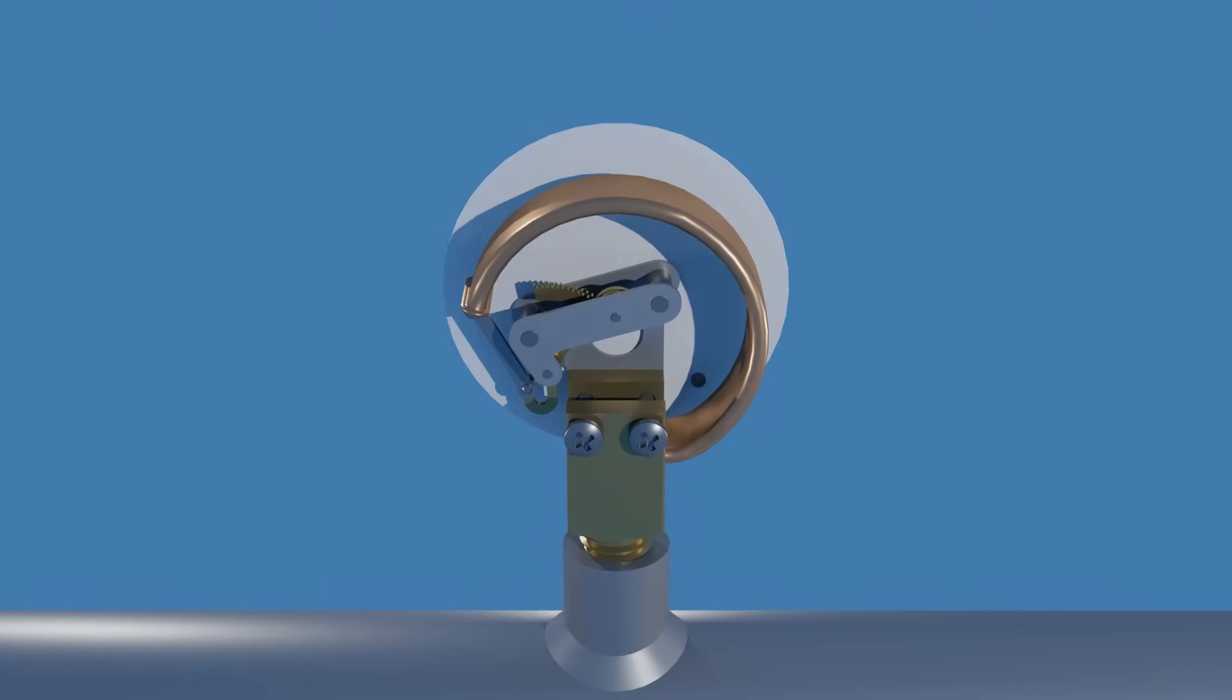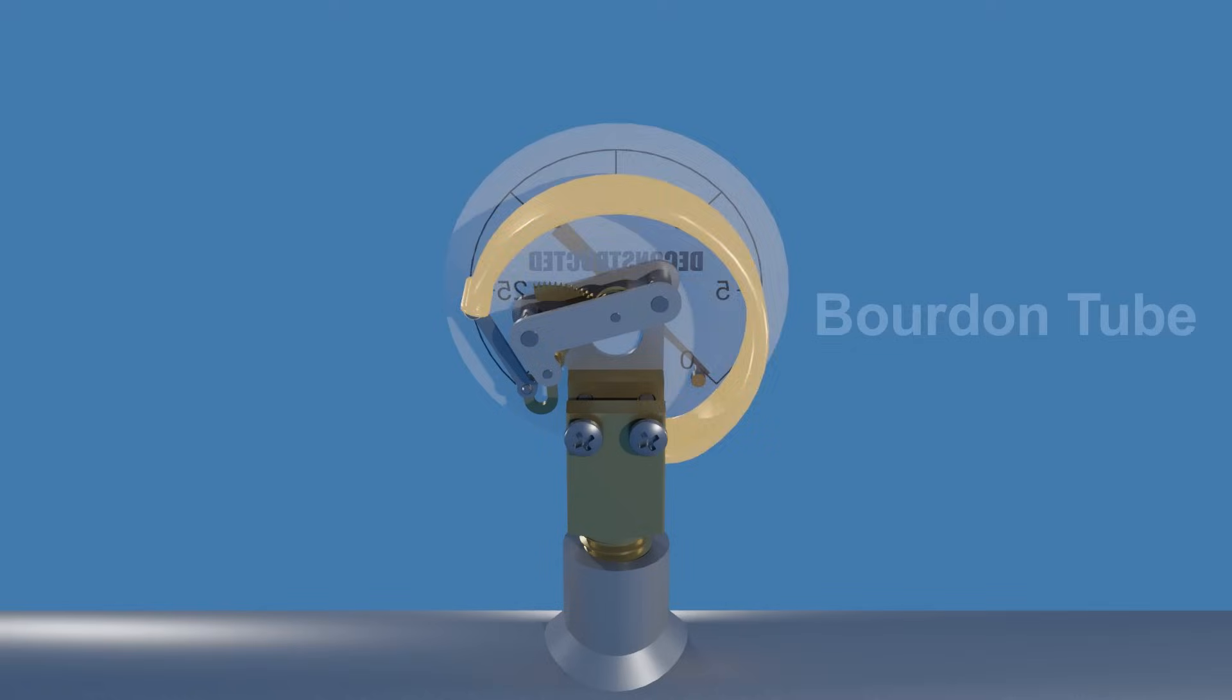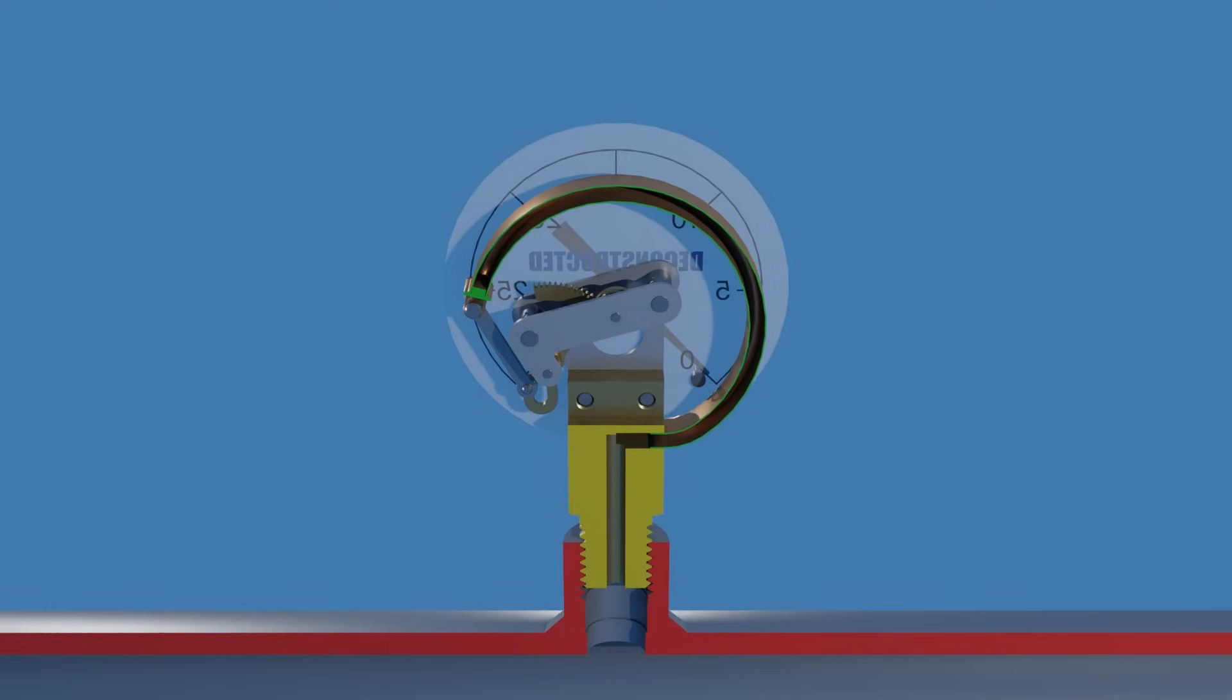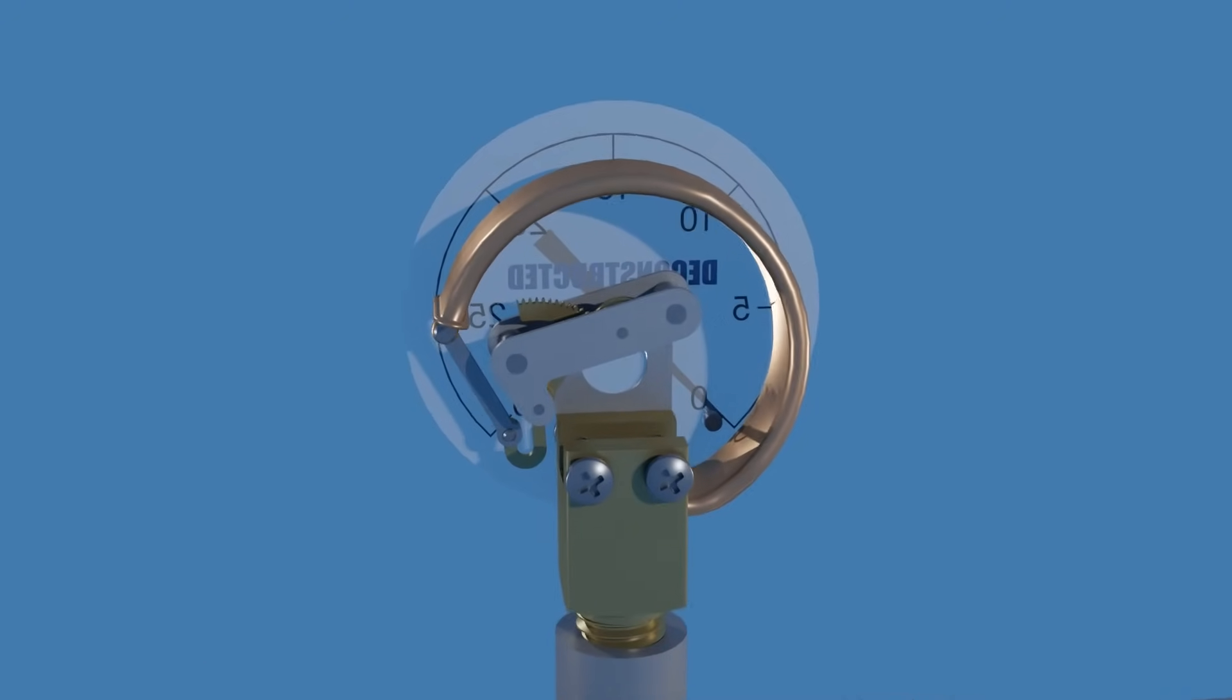Now let's look at the mechanism inside the pressure gauge. This is the pressure sensing element called a Bourdon tube. It's a C-shaped thin-walled metallic tube with an oval cross section. Its working principle is based on the elastic deformation of a curved, flattened tube when subjected to pressure. The tube deformation is proportional to the applied pressure.